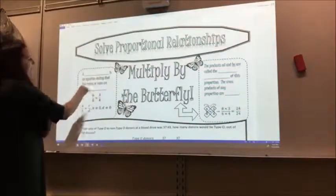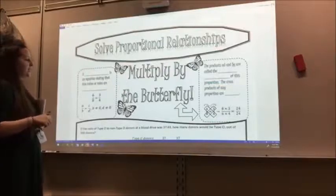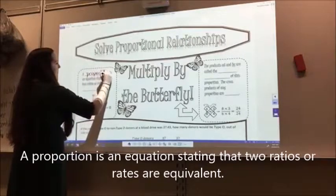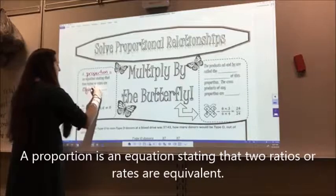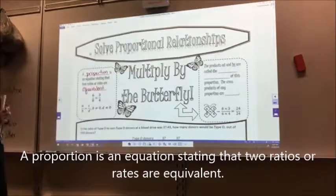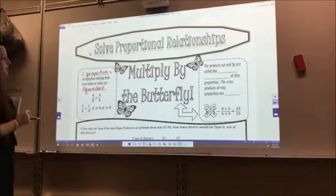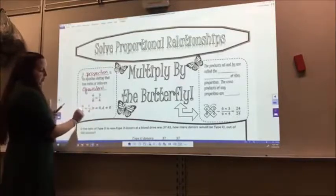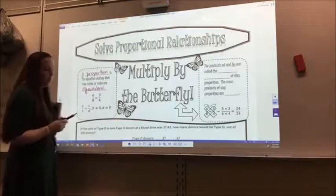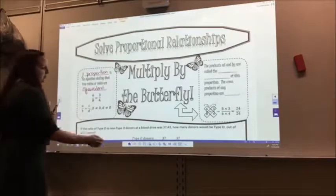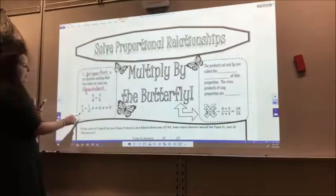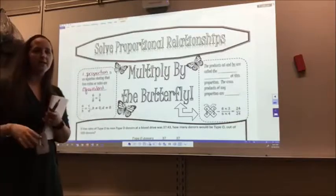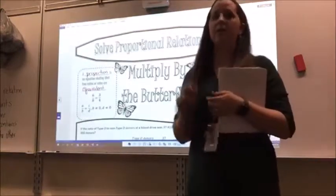A blank is an equation stating that two ratios or rates are blank. So in those two blanks you're going to write proportion and equivalent. A proportion is an equation stating that two ratios or rates are equivalent. So we can see an example here: I have six over eight equals three-fourths. This is actually equal to each other. If I simplify six-eighths I get three-fourths, so they're equivalent. Then in algebraic terms, I have a over b equals c over d. B and d can't be zero because when we divide by zero, bad things happen in math.